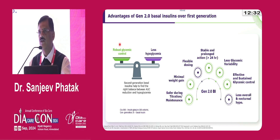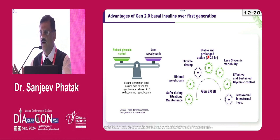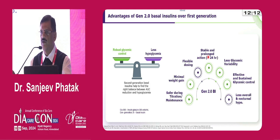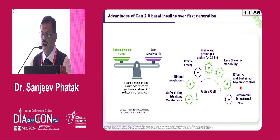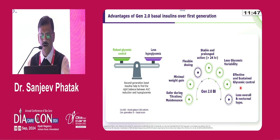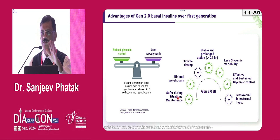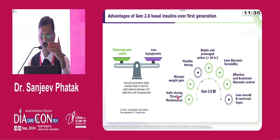From that point of view, second generation basal insulins like insulin glargine U300 offer a great advantage. First, it has stable and prolonged action of more than 24 hours. Glargine U100 typically lasts for 24 hours or less, whereas glargine U300, because of its higher concentration, lasts more than 24 hours — up to 27 hours — giving three hours of flexibility. Moreover, there is less glycemic variability compared to U100, and studies have shown less overall and nocturnal hypoglycemia compared to first generation basal insulin.